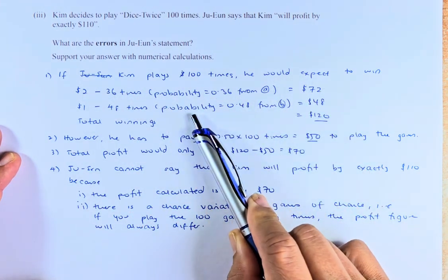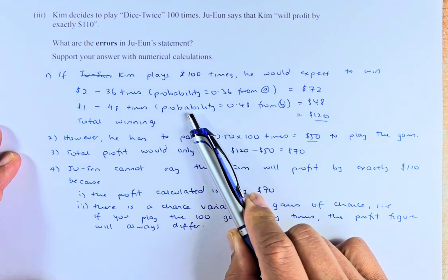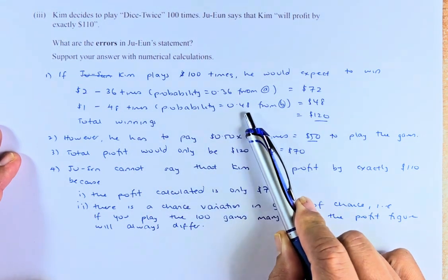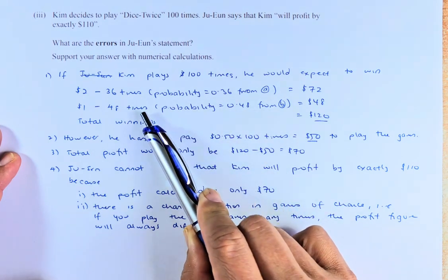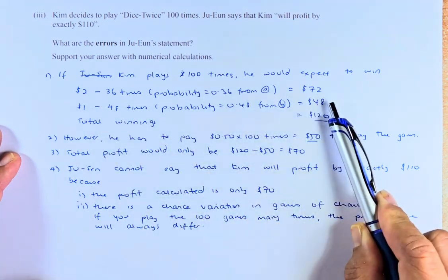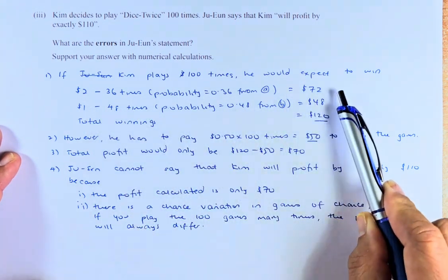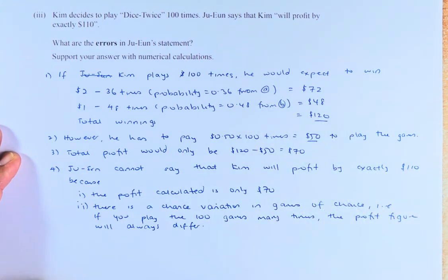Similarly, if he wins $1, it means that he'll win 48 times. Because the probability is 0.48, 0.48 times 100 is 48 times, 48 times the dollar, so he'll get $48. So, total winnings will be 72 plus 48 will give us $120.